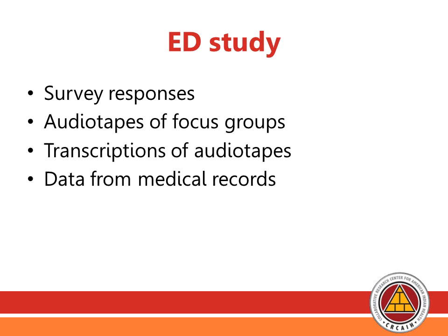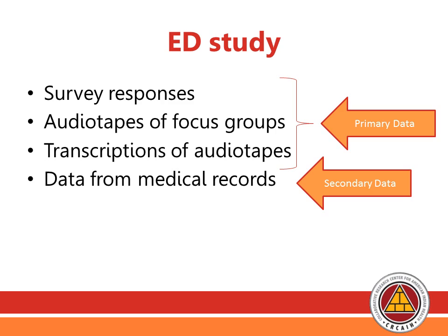In the emergency room study, we have many different modes for gathering information. For primary data, we have survey responses, audio tapes of focus groups, and transcriptions of those audio tapes. We also collected secondary data from medical records of people who visited the emergency room. It's usually a combination of the two types of data involved in a research study, assembled to answer the main questions of interest.